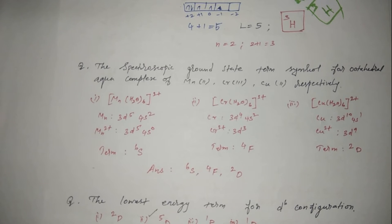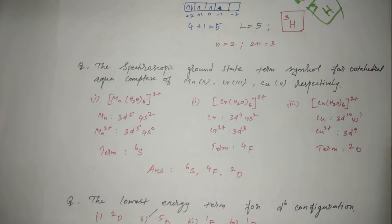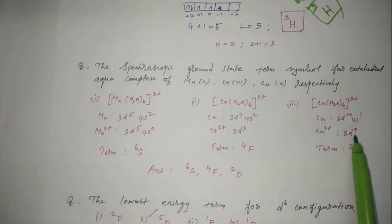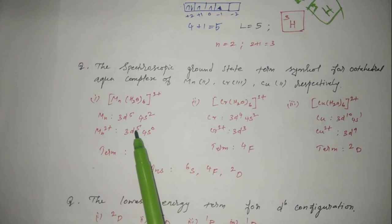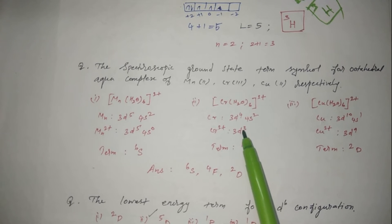Next question: find the spectroscopic ground state term symbols for the octahedral aqua complexes of Mn²⁺, Cr³⁺, and Cu²⁺. H₂O is a neutral (weak field) ligand. Electronic configurations: Mn is 3d⁵4s², Cr is 3d⁵4s¹, Cu is 3d¹⁰4s¹. After ionization: Mn²⁺ is 3d⁵, Cr³⁺ is 3d³, Cu²⁺ is 3d⁹. For Mn²⁺ (d⁵): 5 unpaired electrons, 5+1=6, term is ⁶S.